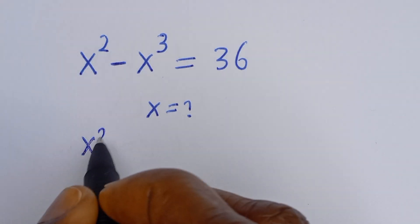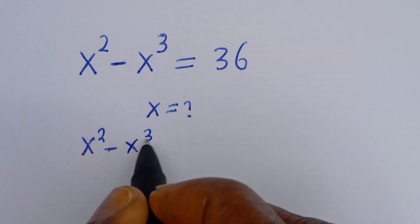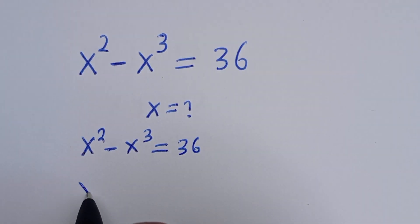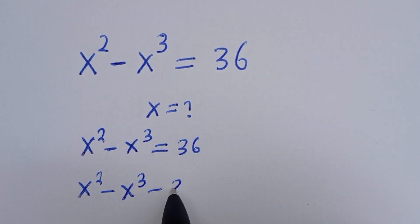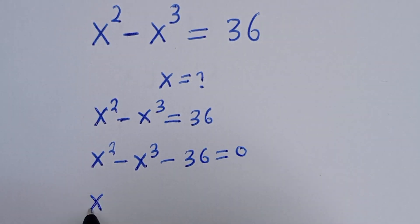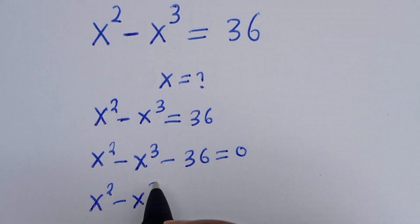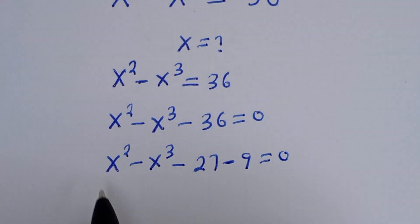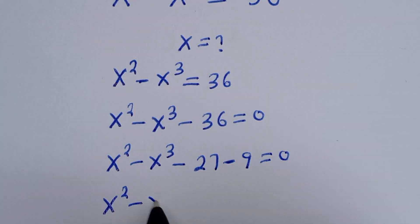We have s squared minus s to the power of 3 is equal to 36. Rearranging, s squared minus s to the power of 3 minus 36 is equal to zero. This can be written as minus 27 minus 9 is equal to zero.